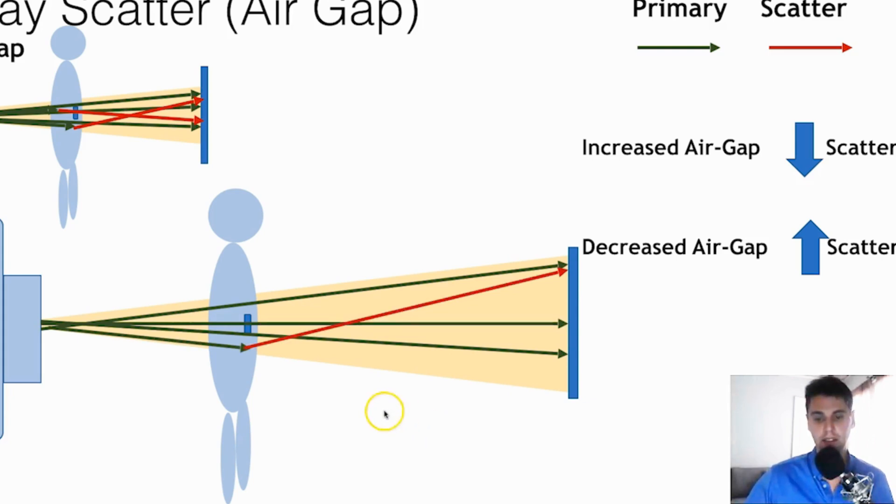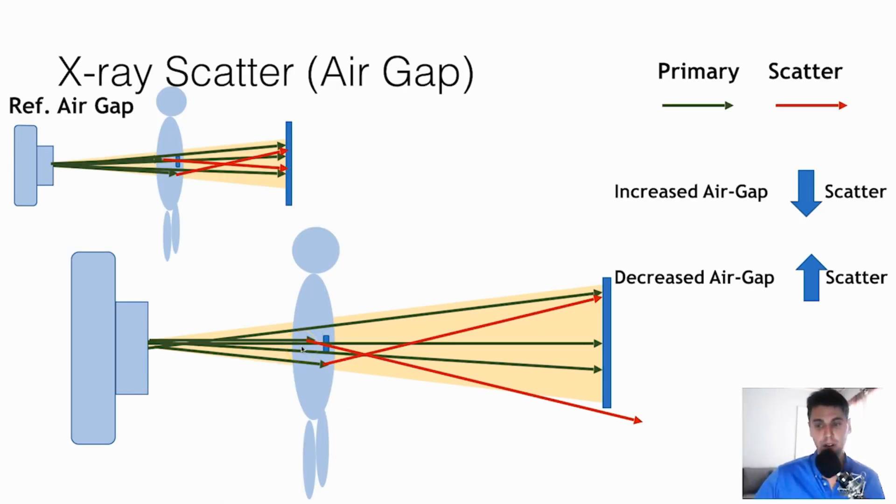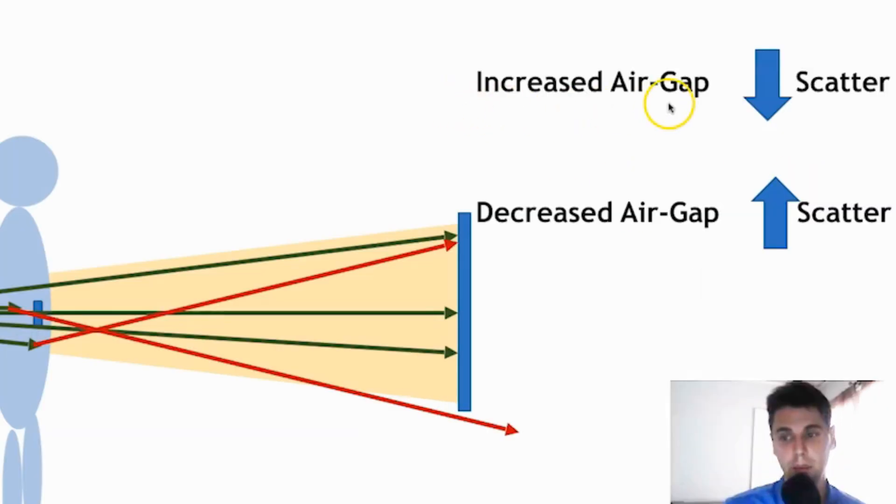but then these scatter events, some of the scatter will still be incident on the detector, but some of the scatter will actually now fall off of the detector because we've now moved the detector further away. So in general, the primary takeaway for today is increased air gap leads to reduced scatter, and a decreased air gap leads to increased scatter.